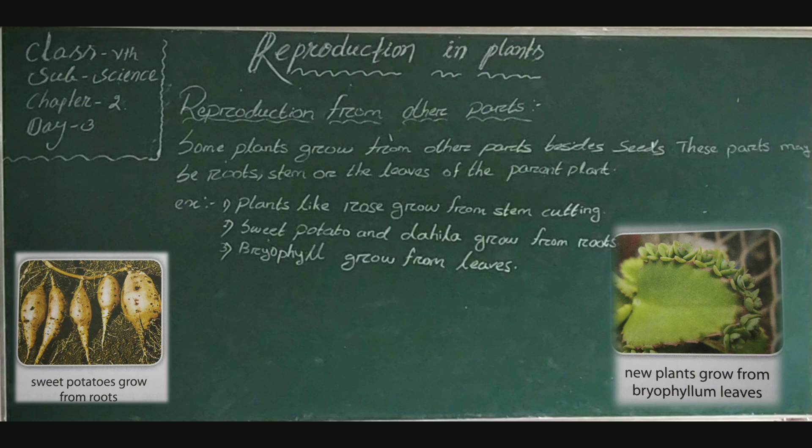We have read in earlier classes that plants can also grow from other parts besides seeds. That is, some parts may be roots, stem, or the leaves of the parent plant. For example, plants like rose grow from stem cuttings. Sweet potato and begonia grow from roots.